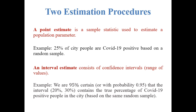But in the interval estimate, we consider a range of values — that means some confidence interval. We provide two numbers that contain the true value of the parameter with some probability. For example, we say that we are 95% certain that the interval 20% to 30% contains the true percentage of COVID positive people in the city. Here we provide two numbers: 20% and 30%, and the true value lies in between with probability 0.95.